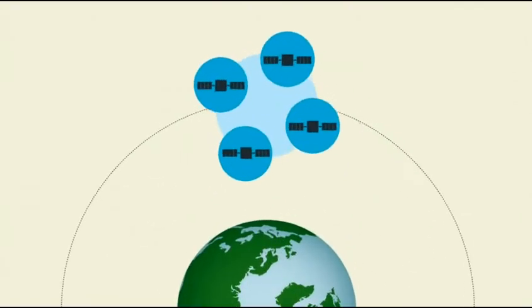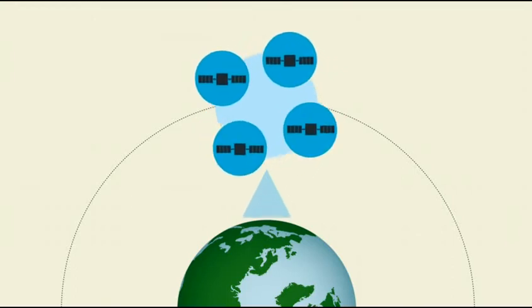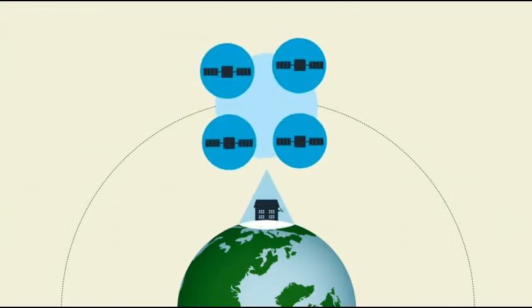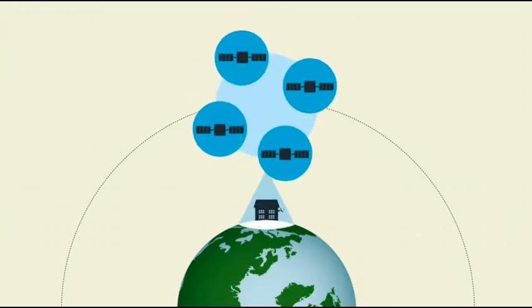We call this clustering of satellites co-location. The zone where the co-located satellites live is called an orbital slot.